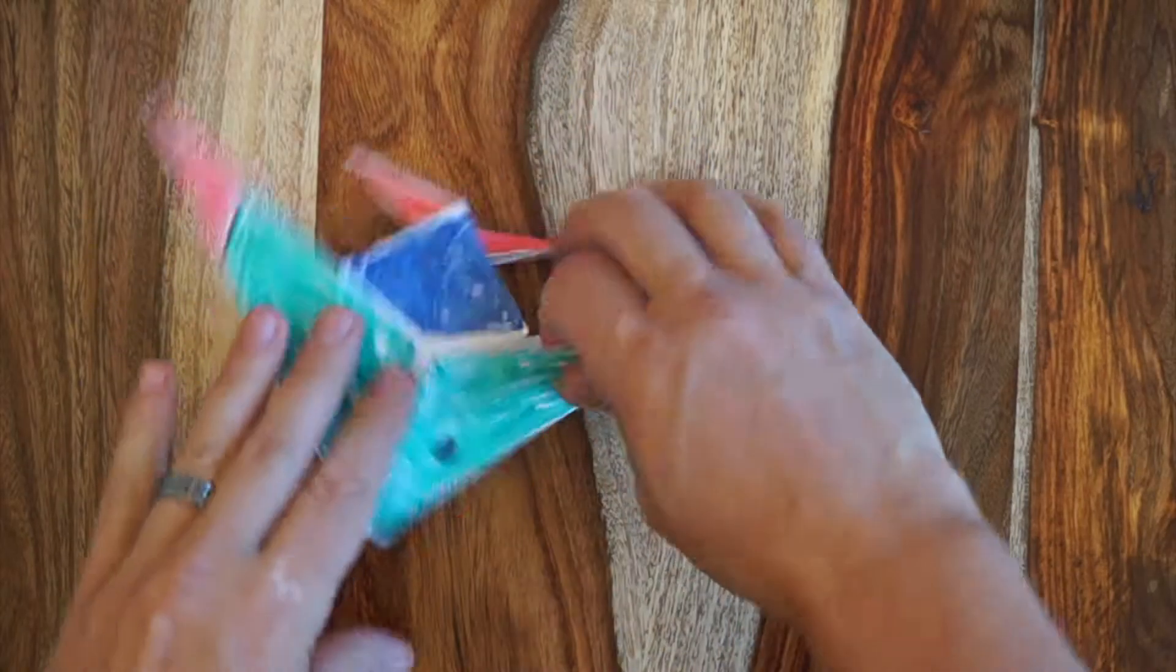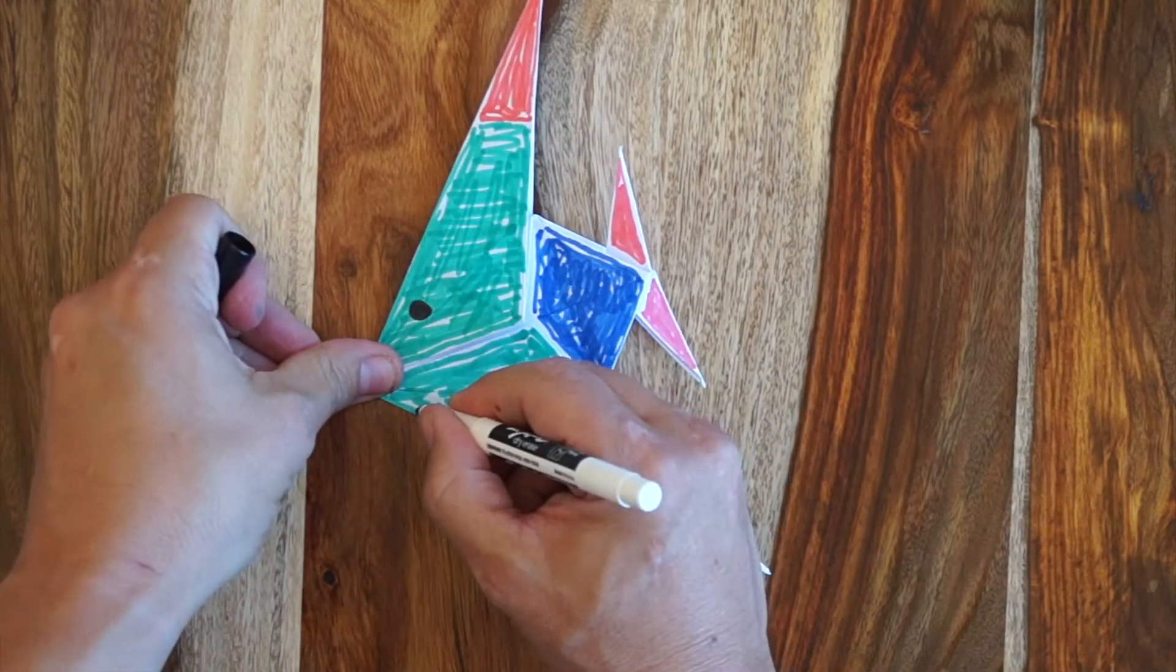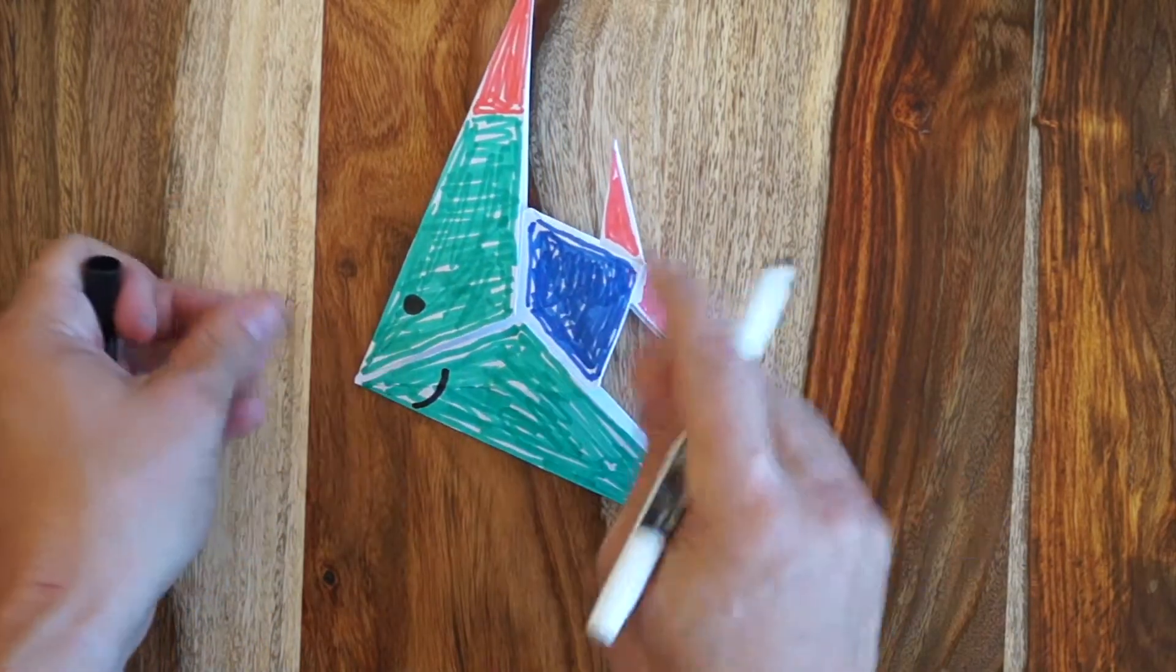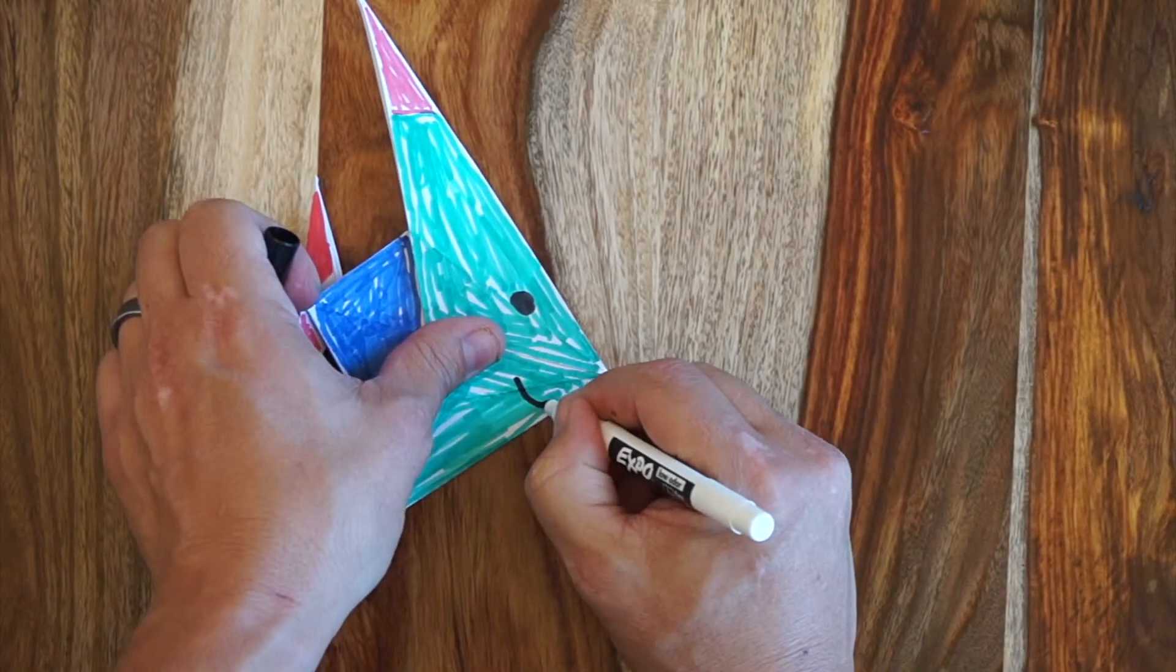All right, so there we have a colored in fish. I guess I could add a mouth too in here.